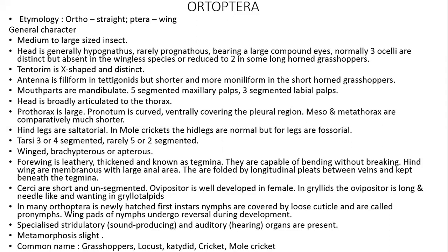Hind legs are saltatorial — adapted for jumping. Mole crickets have normal hind legs, but their forelegs are fossorial, meaning adapted for digging. Tarsus is three or four segmented, rarely five or two segmented.